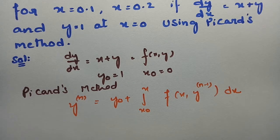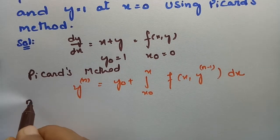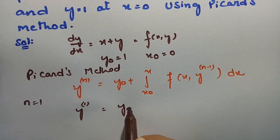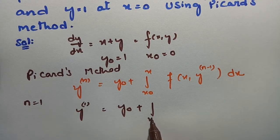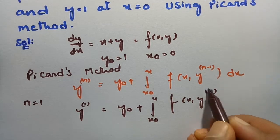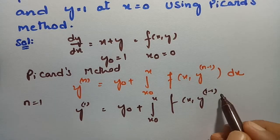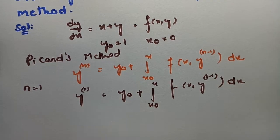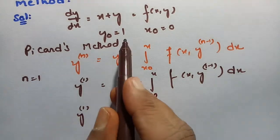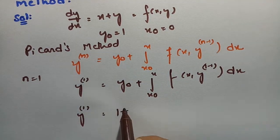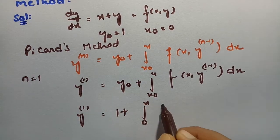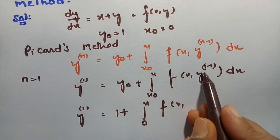For the first approximation, I am keeping n = 1. So the first approximation is y₁ = y₀ + integral from x₀ to x of f(x, y₀) dx. Here y₀ = 1 and x₀ = 0, so y₁ = 1 + integral from 0 to x of f(x, y₀) dx.